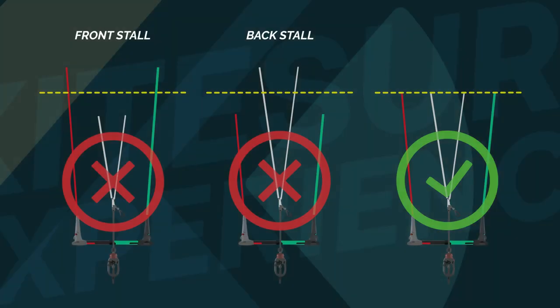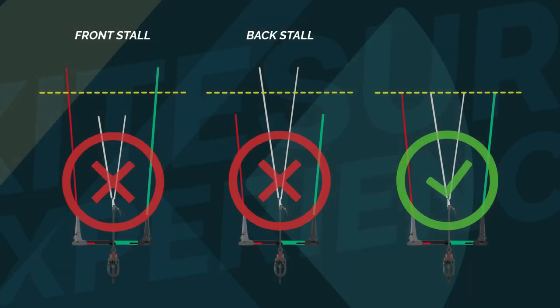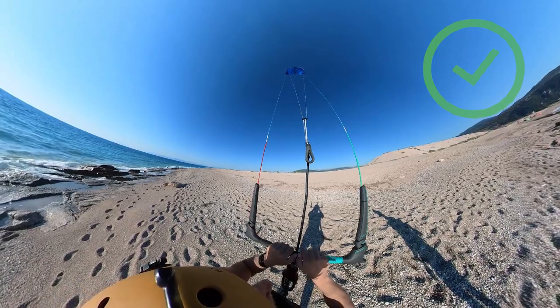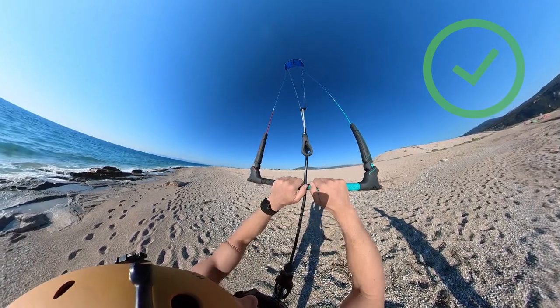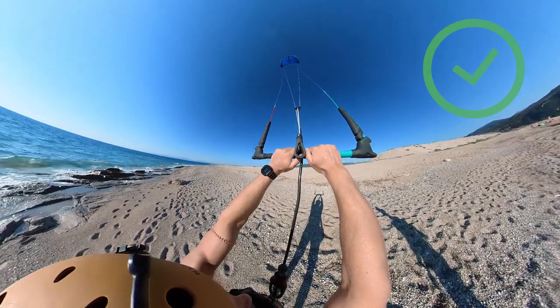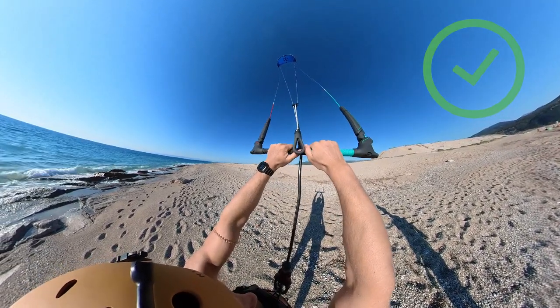It's important to have your bar lines symmetrical so that while depowering or pulling the bar it doesn't cause the kite to front stall or back stall. Check out my next episode where you can see how to perform a trim check once you launch your kite.